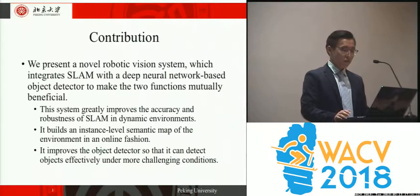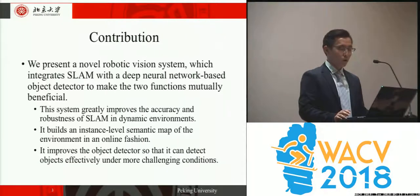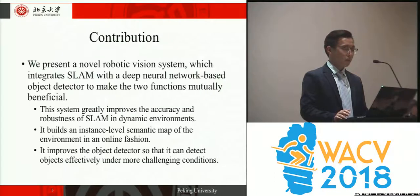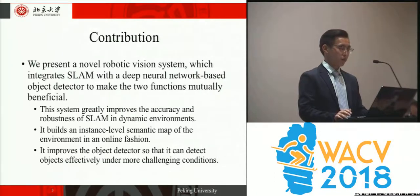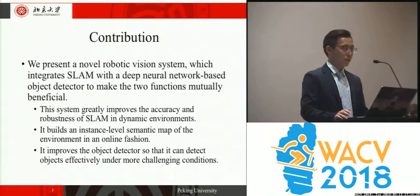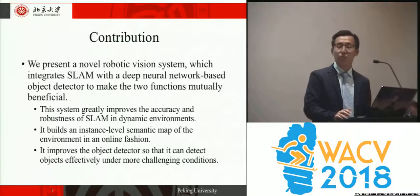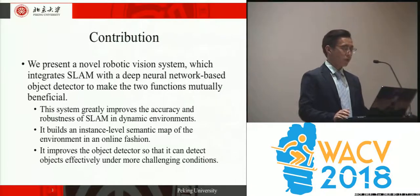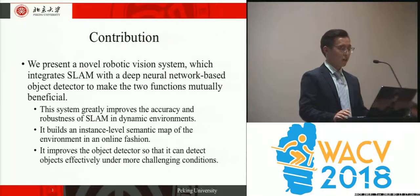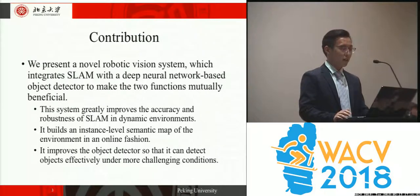To address these problems, we bring out a novel robotic vision system which integrates SLAM with a deep neural network based object detector to make the two functions mutually beneficial. Firstly, this system greatly improves the accuracy and robustness of SLAM in dynamic environments. Secondly, it builds an instance-level semantic map in an online fashion. Thirdly, it improves the object detector so it can detect objects under more challenging conditions.